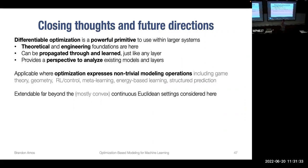To summarize, differential optimization can be used as a component in machine learning modeling pipelines, treated like any other layer. There are applications anywhere optimization expresses non-trivial modeling operations. While the focus here has been on convex and continuous equilibrium settings, these ideas can be extended to discrete, combinatorial, and non-Euclidean settings.